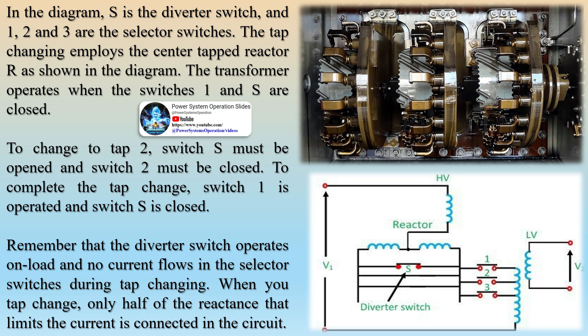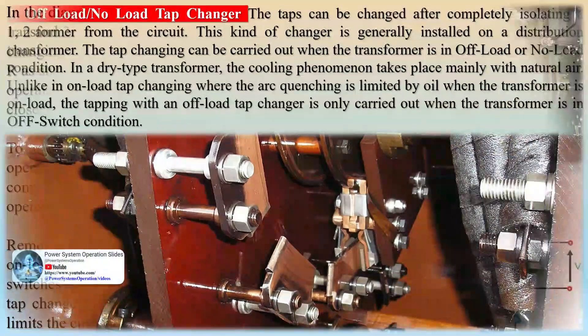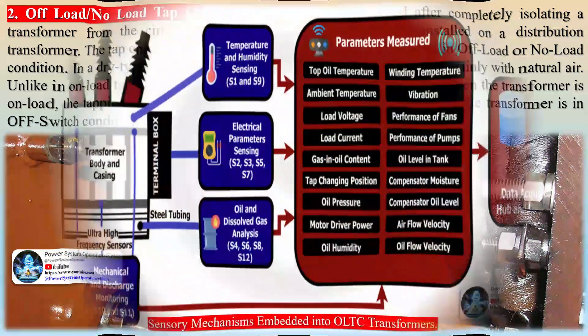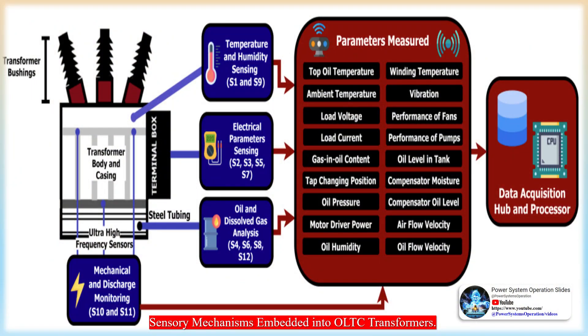It is imperative to choose the right kind of tap changer based on your requirements. Substations perform a number of functions in an electrical power grid: connecting transmission lines, generators, and loads to each other; transforming power from one voltage to another; isolating faulted or overloaded lines or equipment; and controlling the power system voltage and power flow. Large and complex mechanical devices are used to perform these functions and need to be inspected, tested, and maintained by knowledgeable technicians.